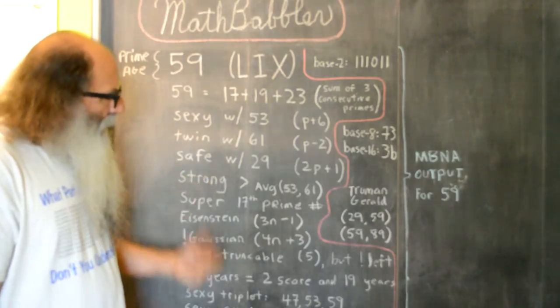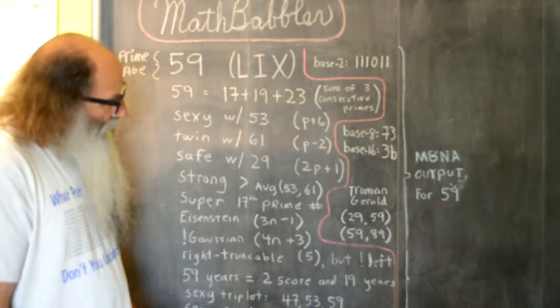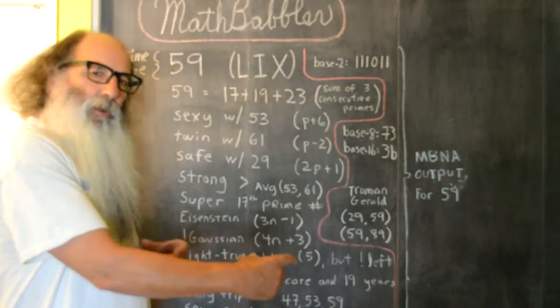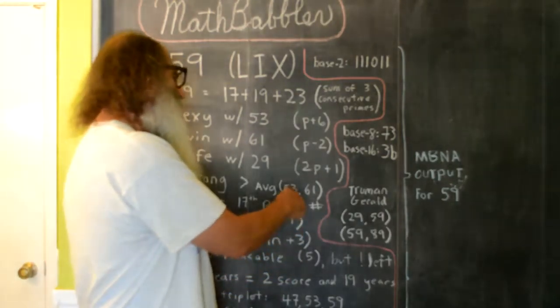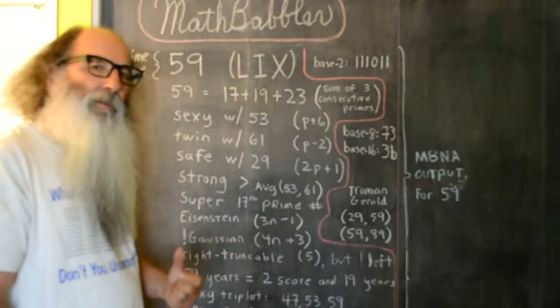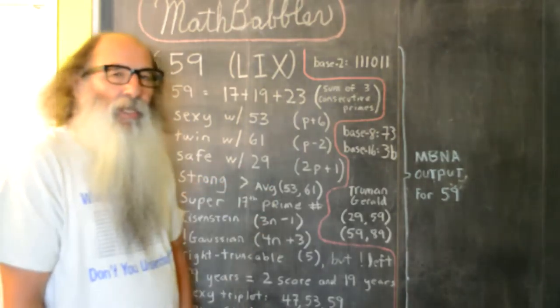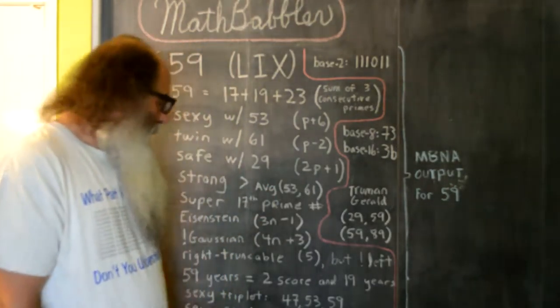59 is a strong prime because if we take the average of the two primes that are around 59, in other words 53 and 61, when we take that average, 59 is greater than that average, and that makes it a strong prime.